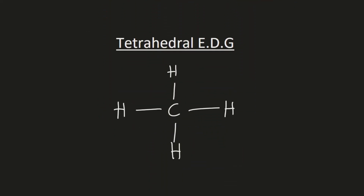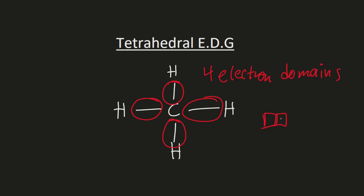If there are four electron domains around the central atom, the electron domain geometry is called tetrahedral. For example, CH4 has four electron domains around the central carbon atom, so it has a tetrahedral electron domain geometry. You can remember this because there are four electron domains, just like how there are four cubes in each piece in Tetris. You can see the beginnings of these words are the same.